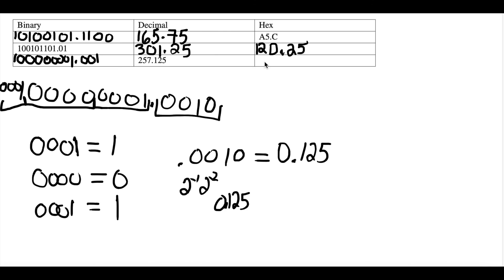Therefore, in hex form this would be equal to 101.125. The chart is now completed. If you have any questions or concerns, please comment down below. If you have any other topics you want me to cover, comment below and I'll make a video on it. Thank you so much for listening — remember to like, comment, and subscribe if you enjoyed the video. Now we know how to convert binary, decimal, and hex numbers. Thanks for watching!